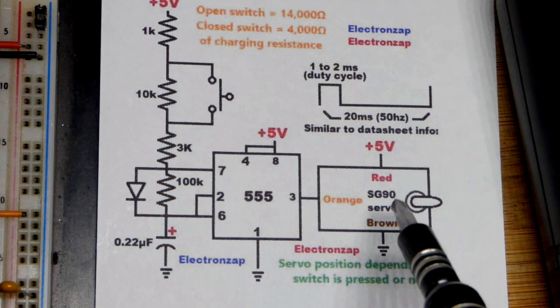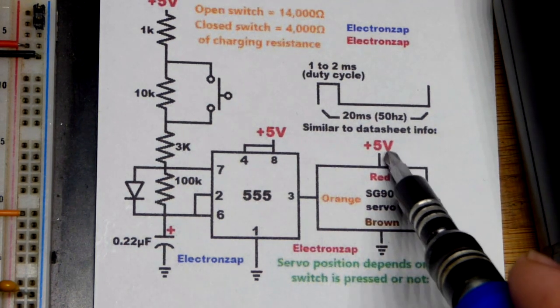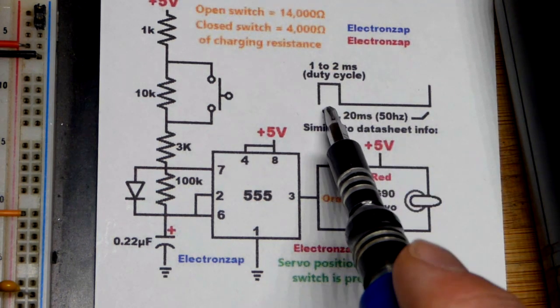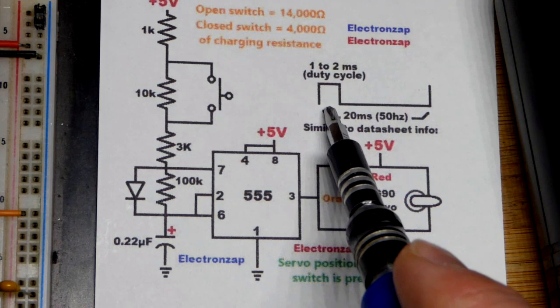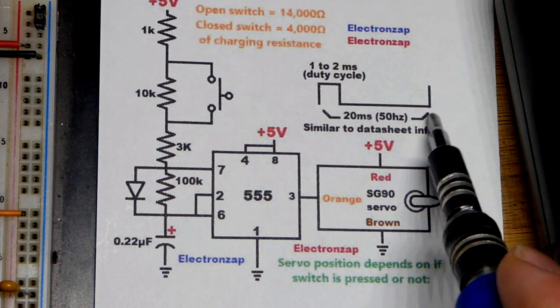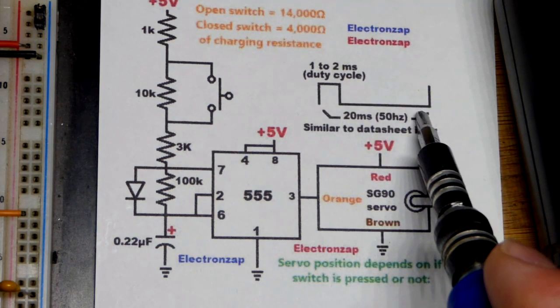The servo we're using is the SG90 right there. Of course, if you're using one, you should look at the data sheet for the specifics, but we're using 5 volts in this video. It has signals that you give it, and that's over about a 20 millisecond period of time. It doesn't have to be exact right there. So this whole process happens about 50 times a second.